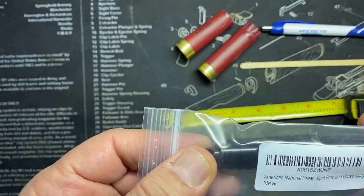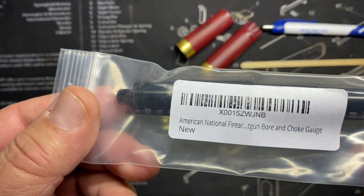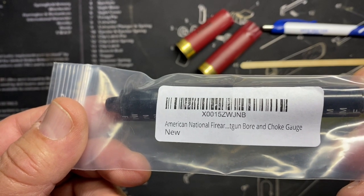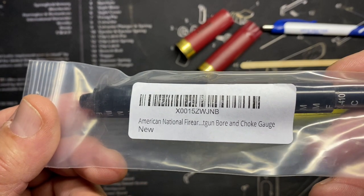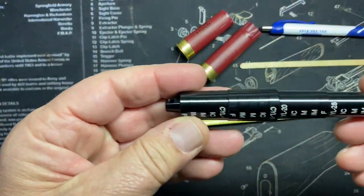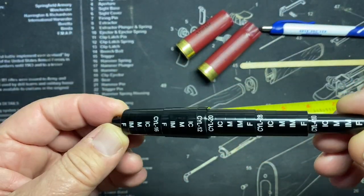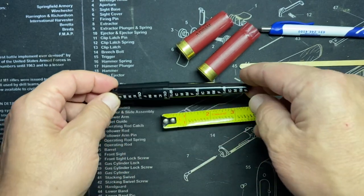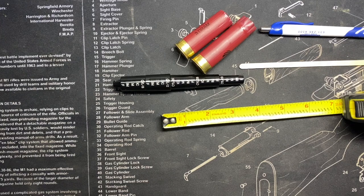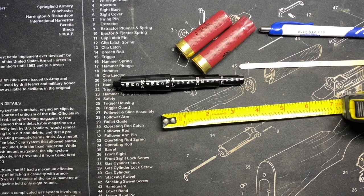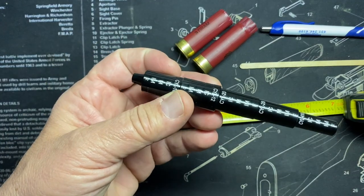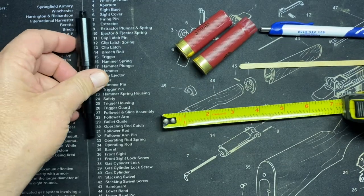This is the American National Firearms Gun Bore and Choke Gauge. Nice. I decided to just finally get one of these things and stop using a dime. I mean, I have to be accurate here. I need to be on the cutting edge of choke sizes, so we're going to mess around with that.